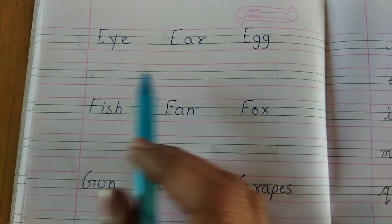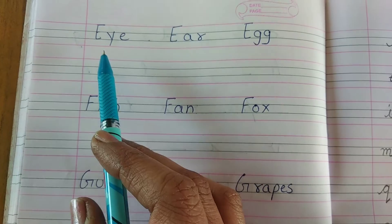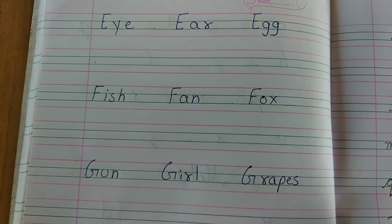In this section, last video you learned A to D spellings. Now in this section we will revise E to H spellings again.